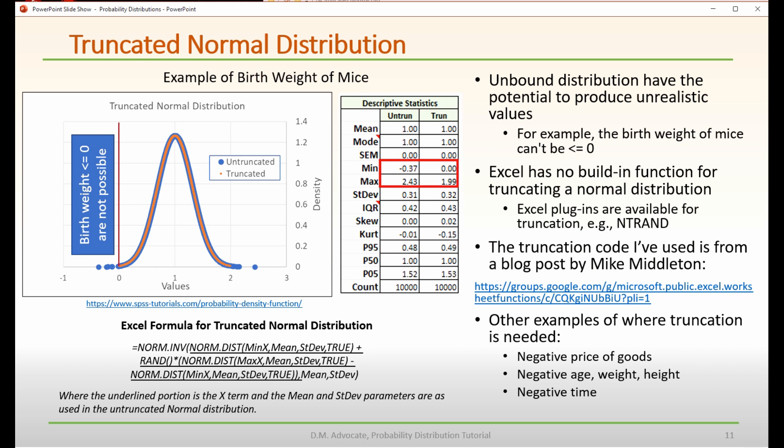There are lots of other examples of where you might want to truncate a normal distribution, where you have negative price of goods or negative age, weight, height or negative time.